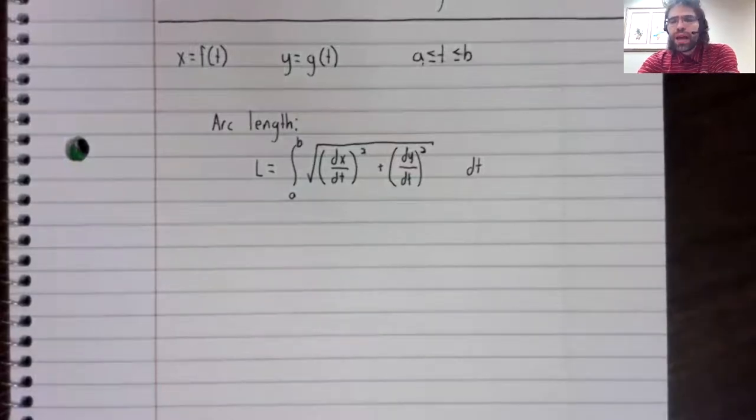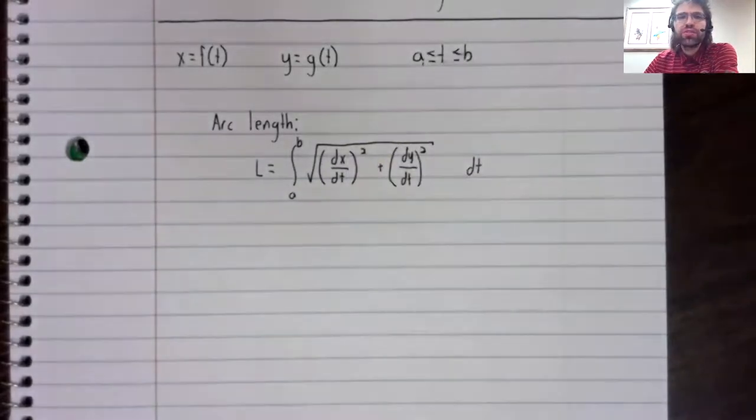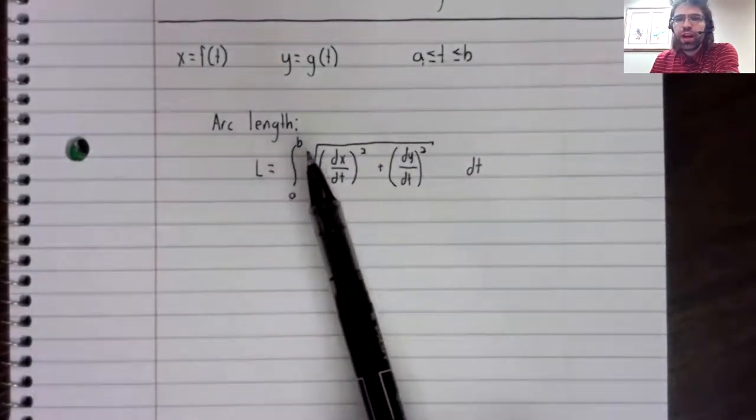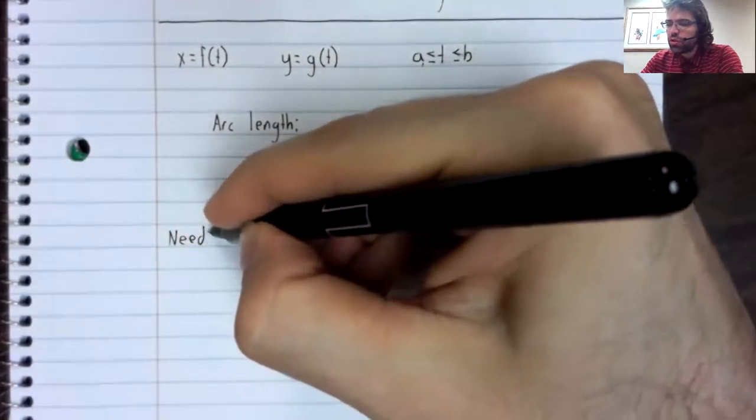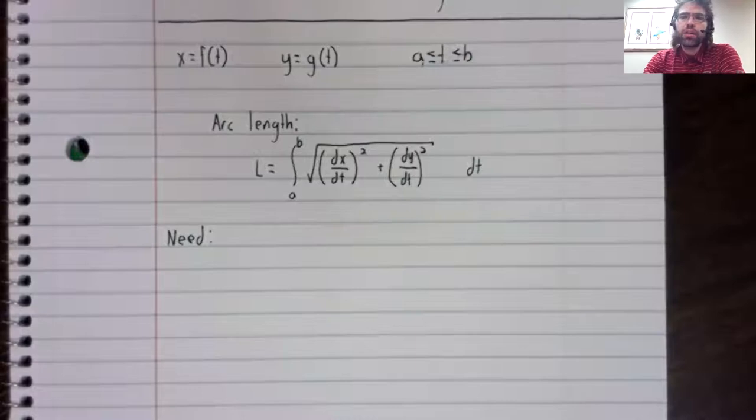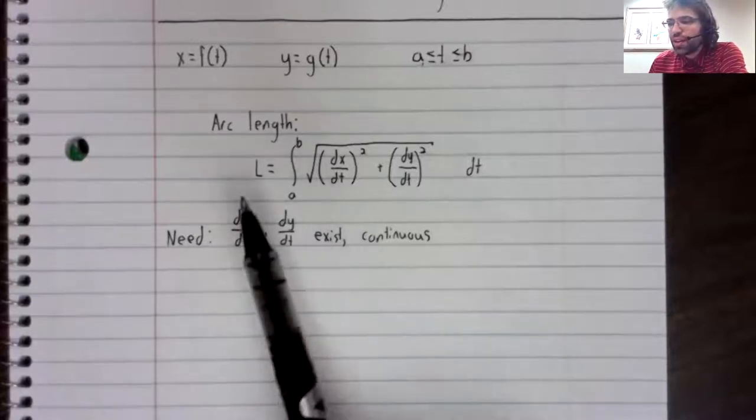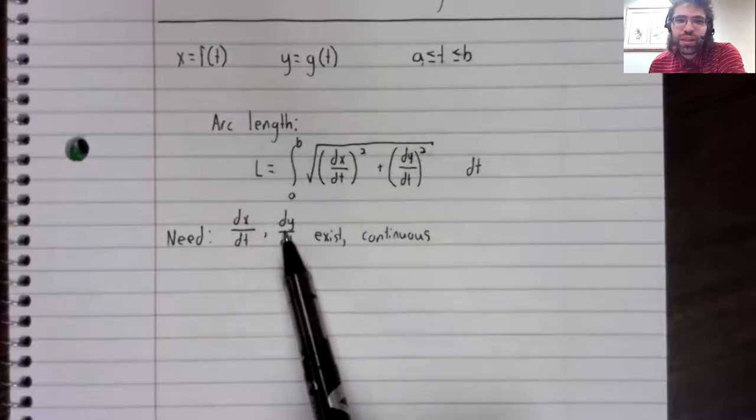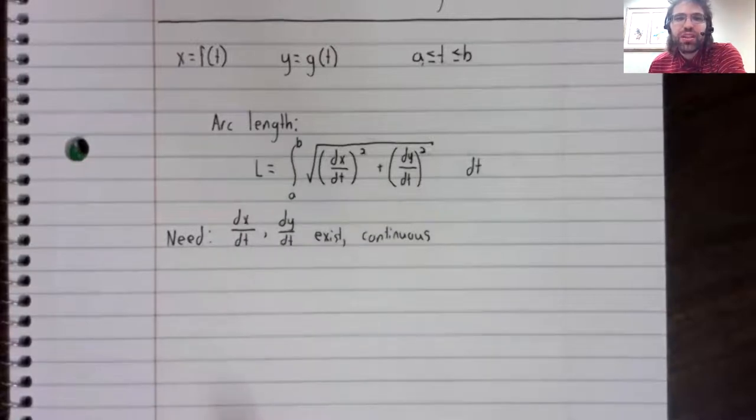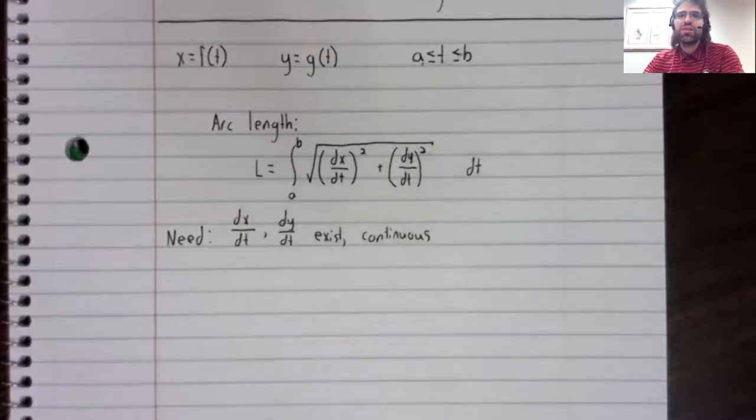And we do have a few requirements that this parametric equation has to satisfy if the arc length formula is to be valid. Let's go through these one by one. Our first requirement is fairly straightforward. This arc length formula has these derivatives in it, so these derivatives had better exist. And in fact, we need something slightly stronger than existence. We need them to be continuous functions.